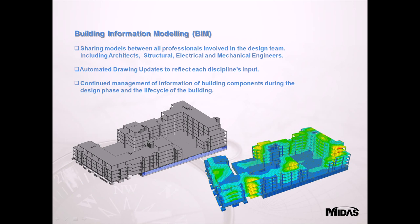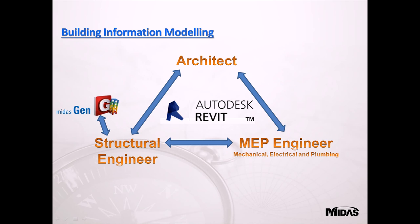Just a little bit about Building Information Modelling. BIM provides the ability to share models between all professionals involved in the design team, which includes architects, structural engineers and MEP — mechanical, electrical and plumbing engineers. Each discipline can update the master drawing which in turn automatically updates the central drawing. The information is all communicated on one platform to create a seamless interaction between all parties. If there is a clash between services and structural members, it can be redesigned quickly and efficiently on that single platform.